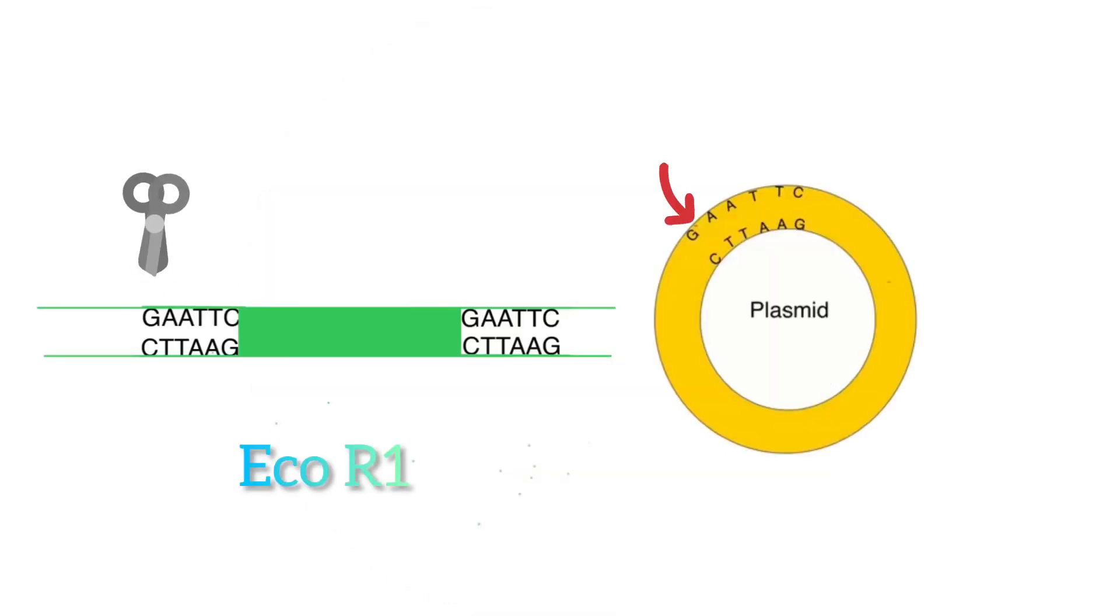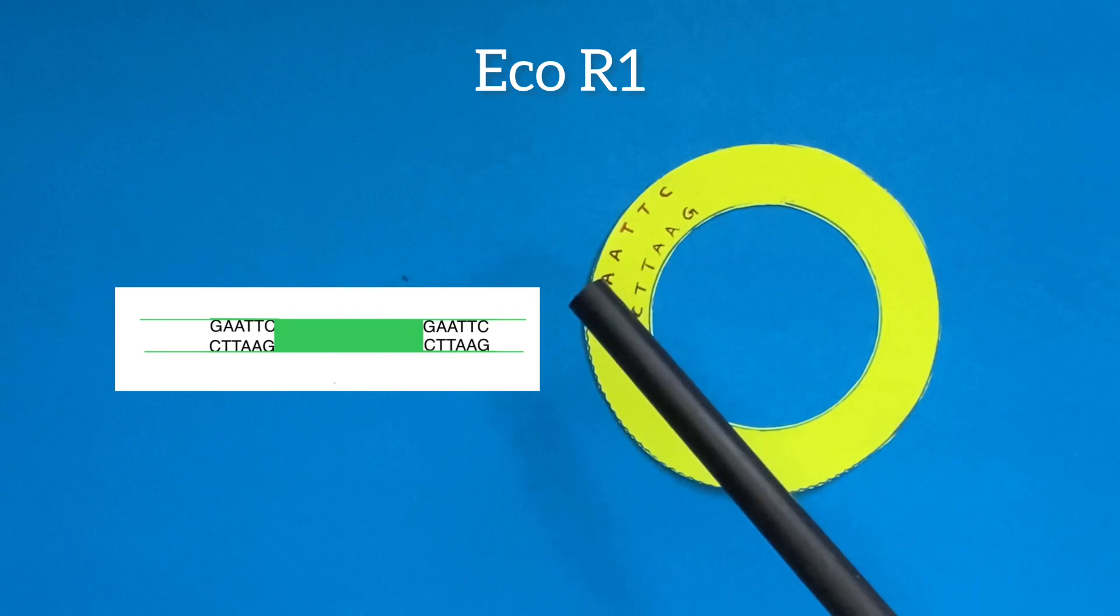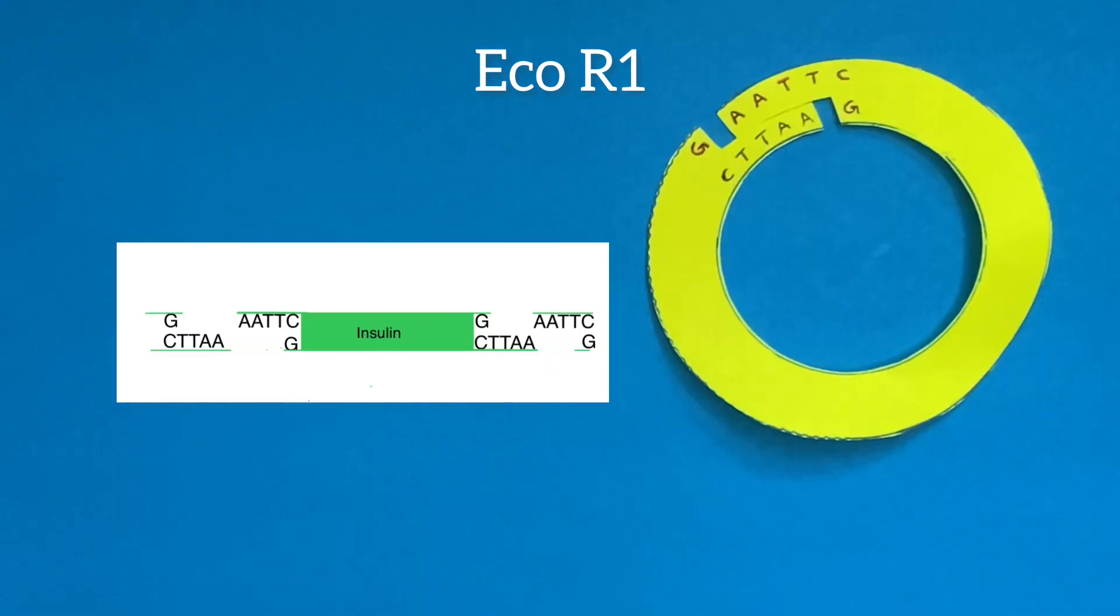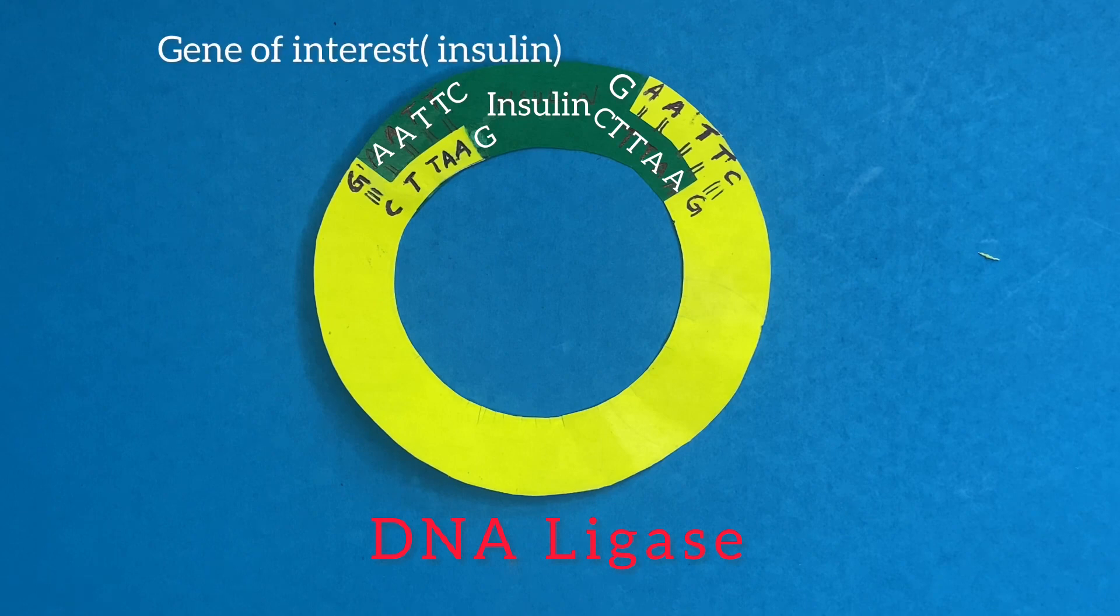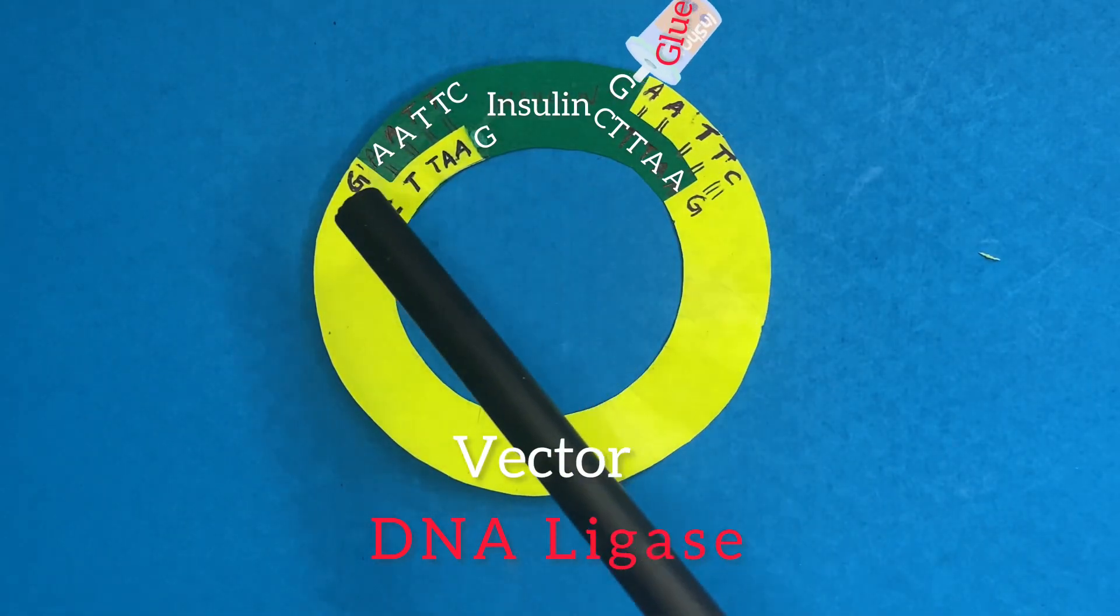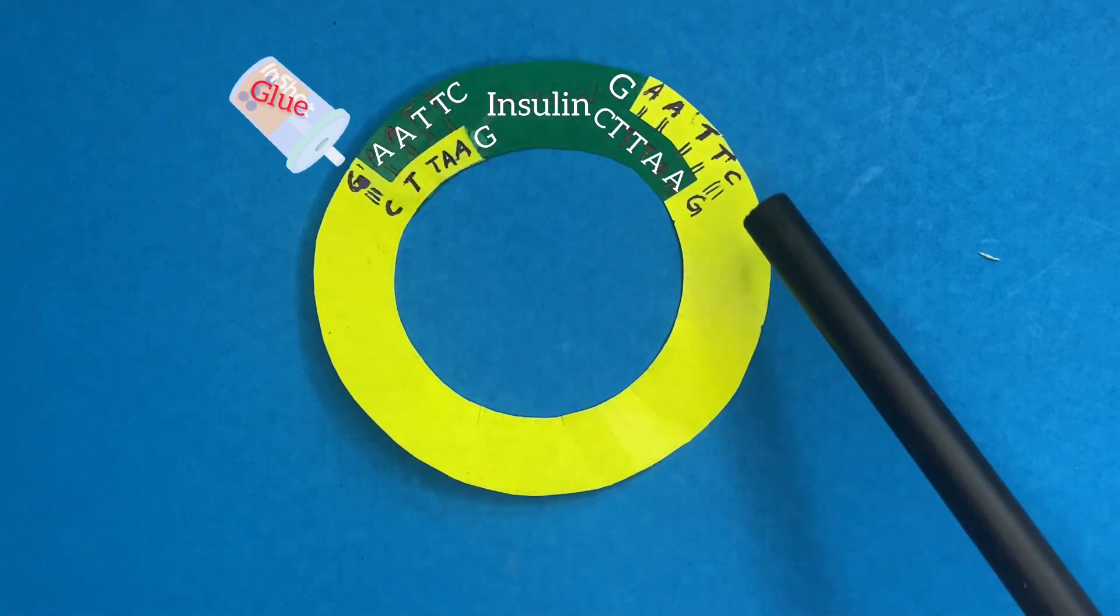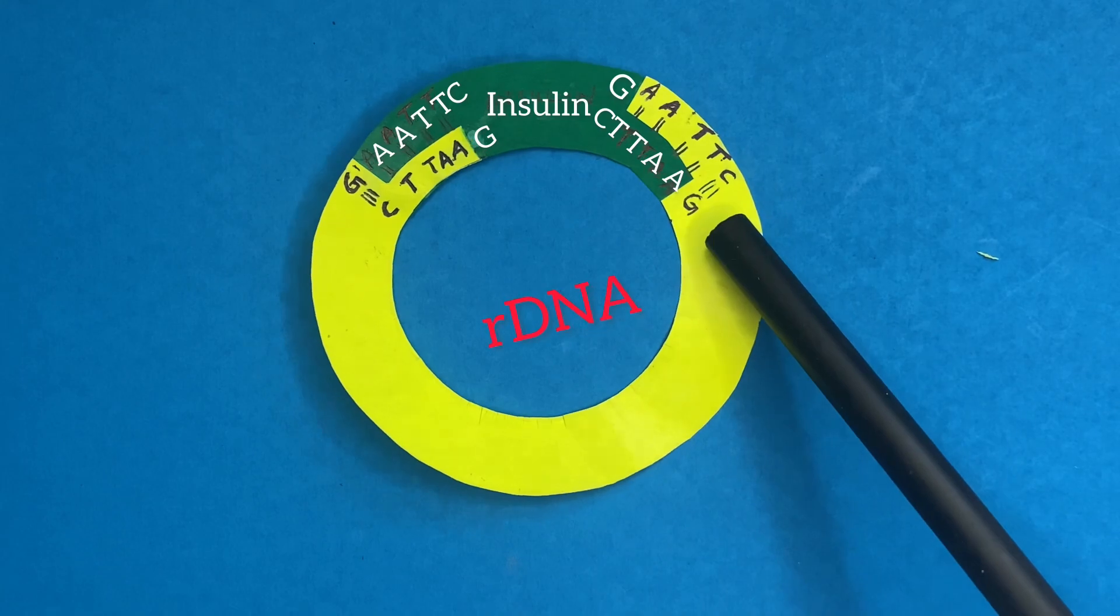With the same restriction enzyme which is used to cut the gene of interest, the vector is cut. This yields the cut DNA fragment and the cut vector, both of which are now open. Both the desired gene and excised vector are brought together in the presence of an enzyme, DNA ligase, that binds the sticky ends of two DNA fragments together to obtain recombinant DNA.